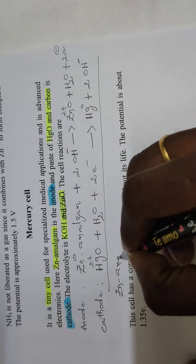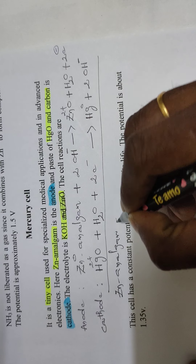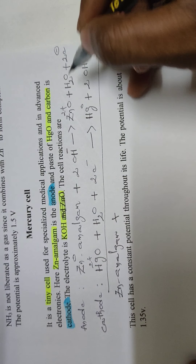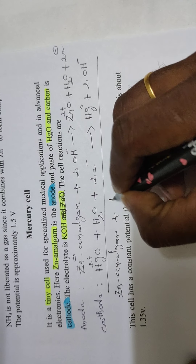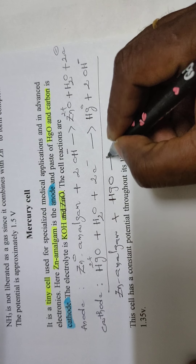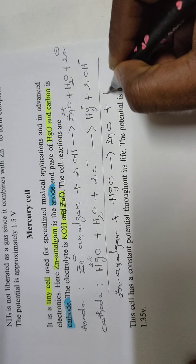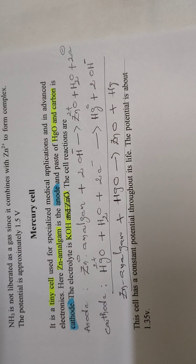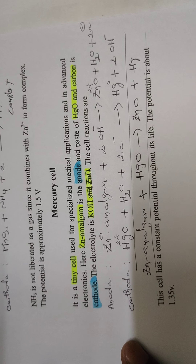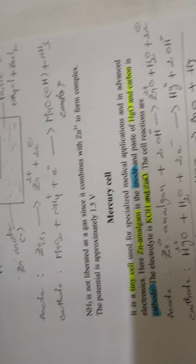The net reaction is: Zn(amalgam) + HgO → ZnO + Hg. The H2O and 2OH⁻ terms cancel out. The mercury cell has a constant potential of approximately 1.35 volts.